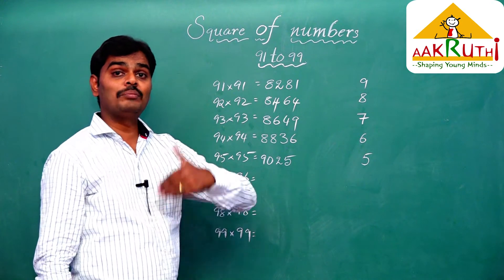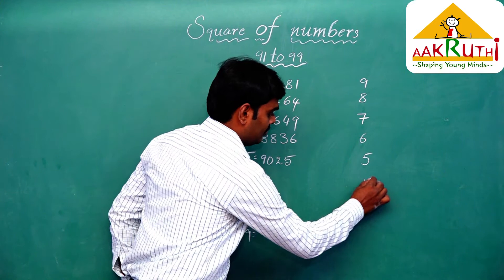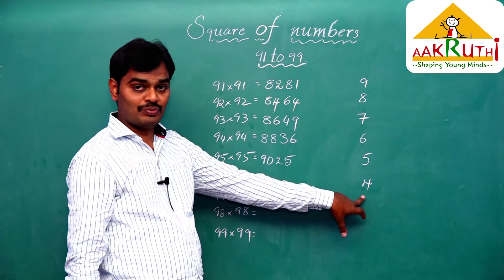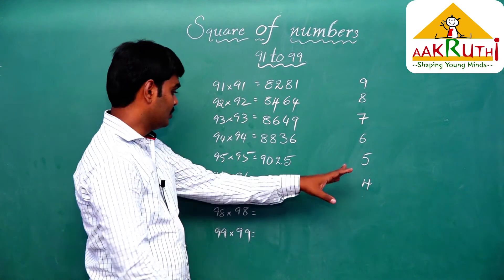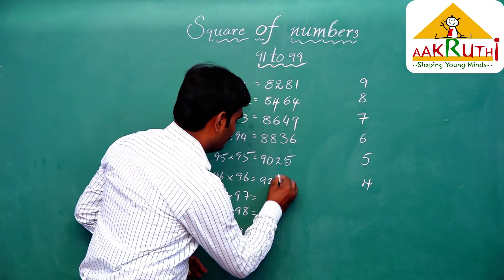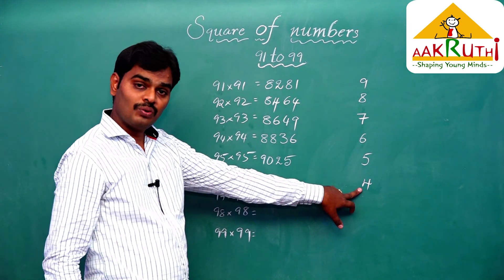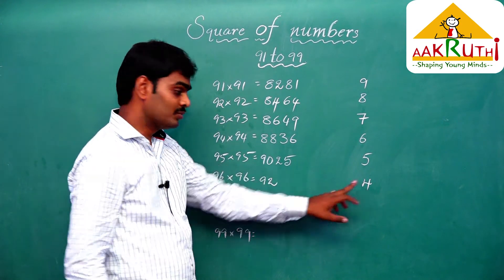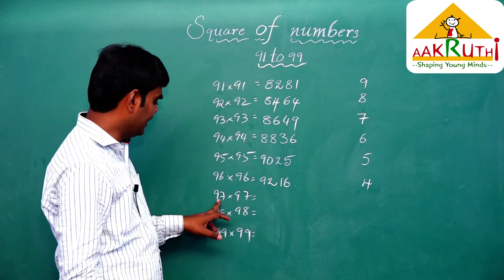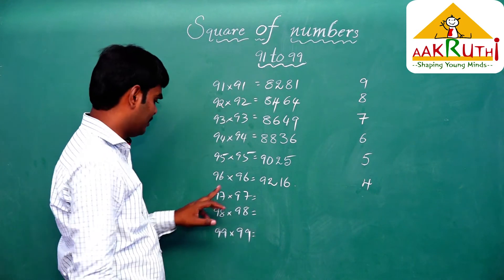Now 96 into 96: 96 is 100 minus 4. The first step is 96 minus 4, which is 92. The second step is 4 squared, which is 16. So 96 squared equals 9216.